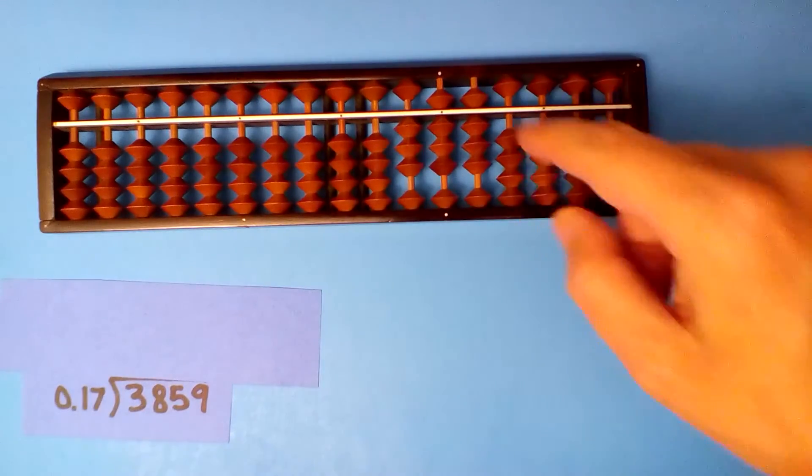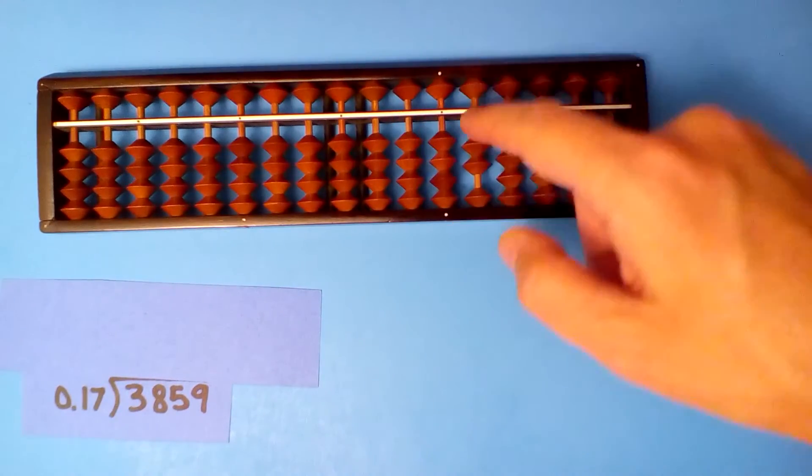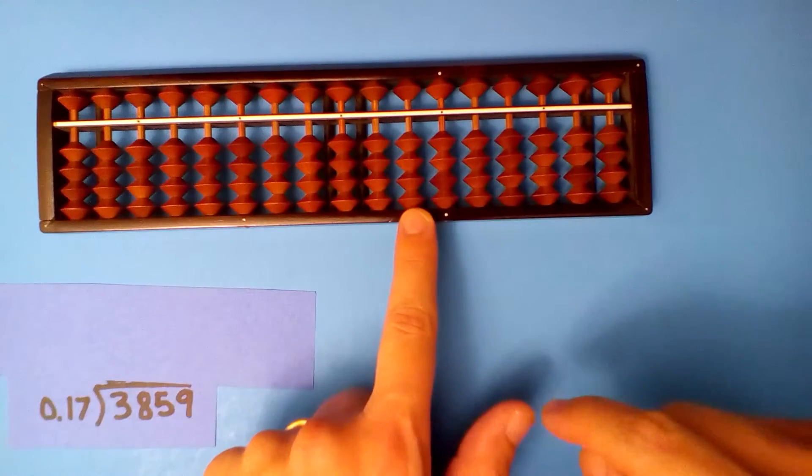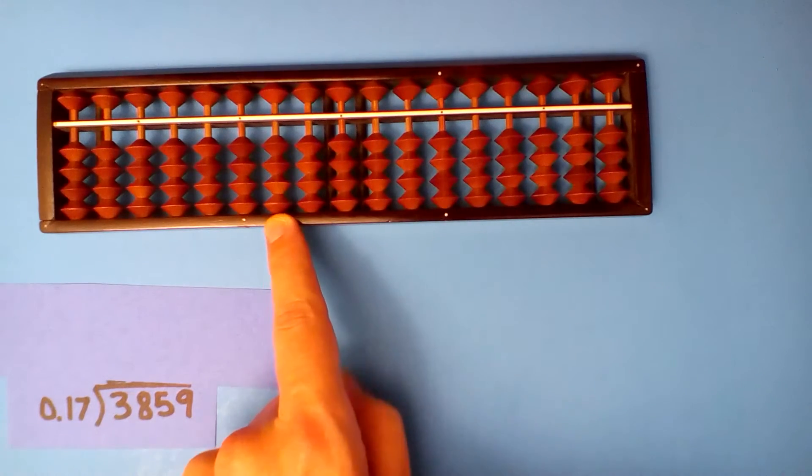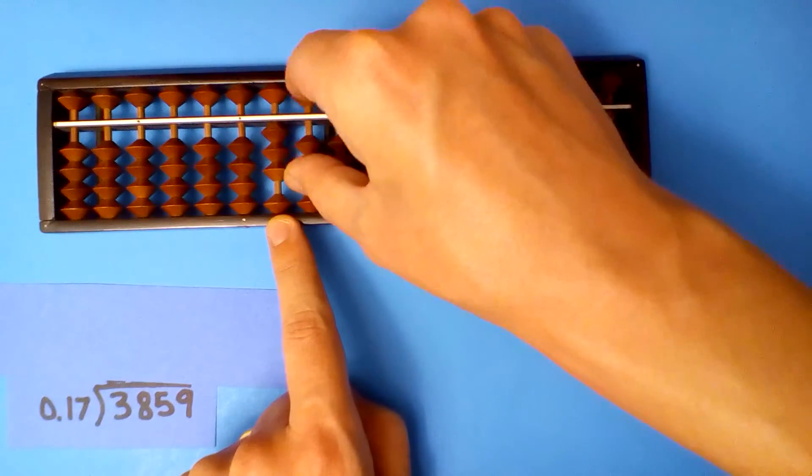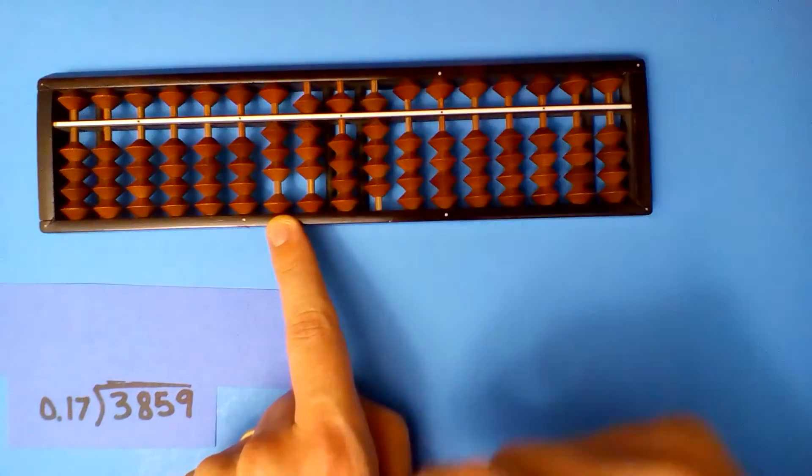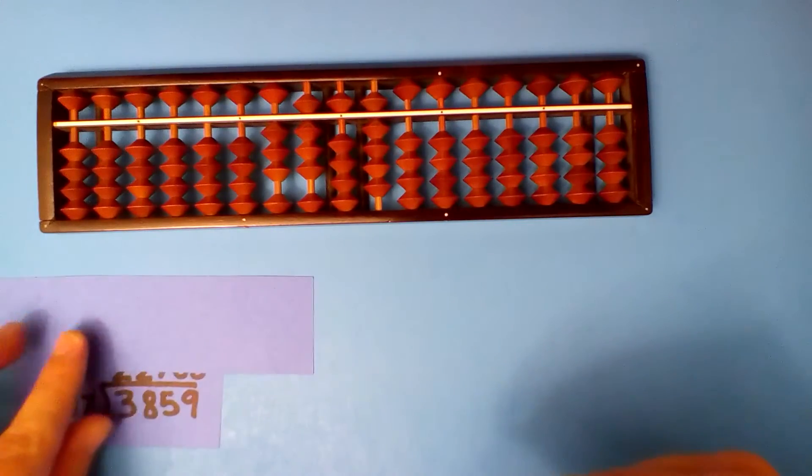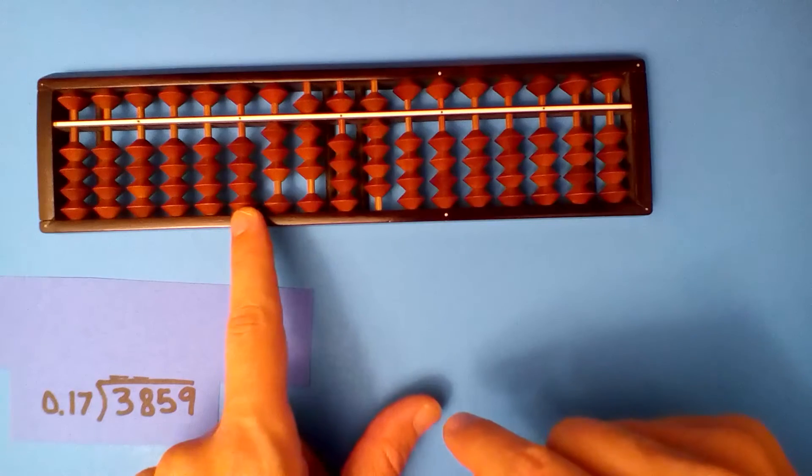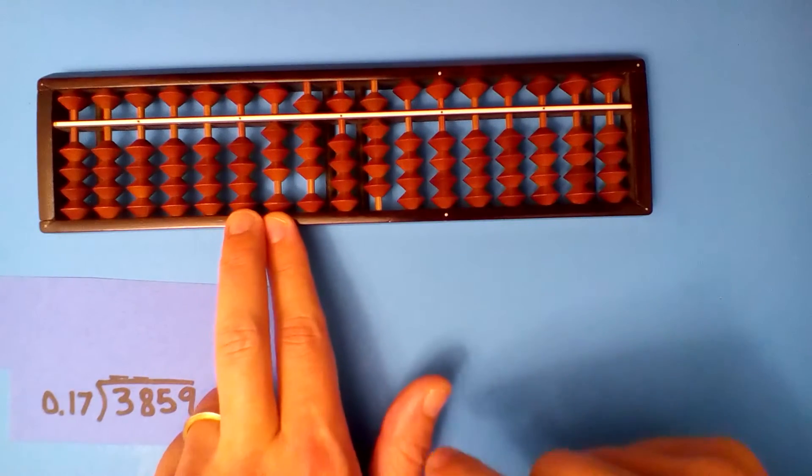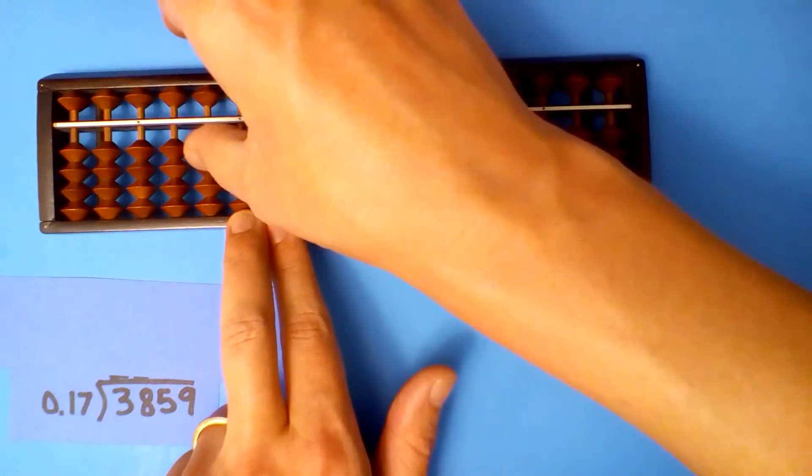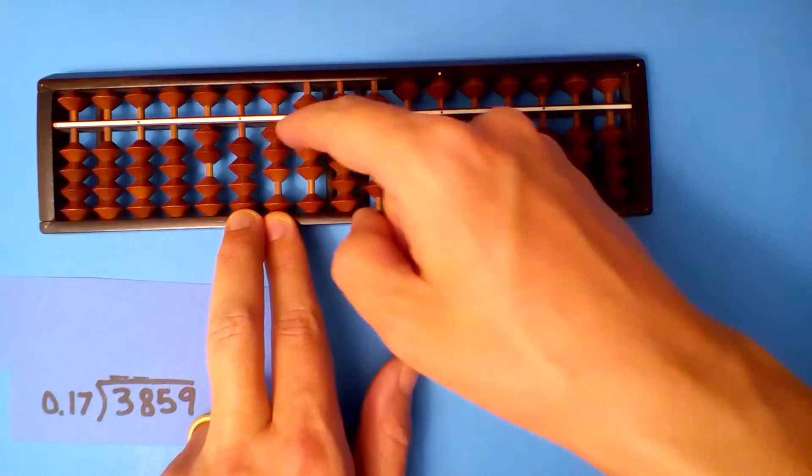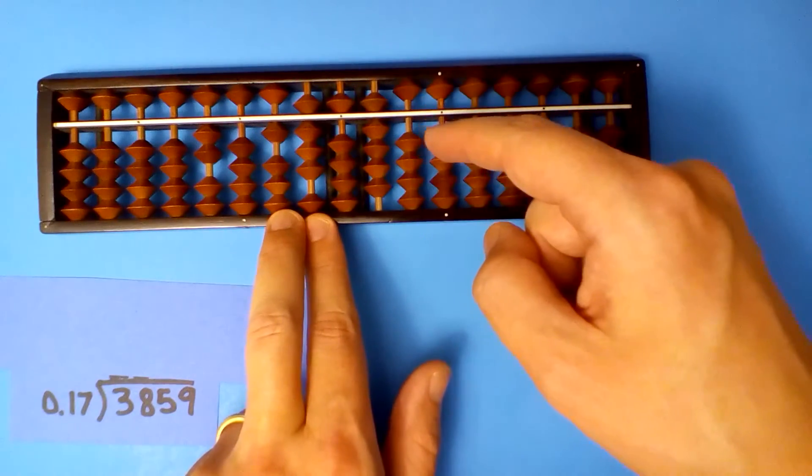What is 3,859 divided by 0.17? Start on the hundreds. Four digits versus zero digits. Four more digits in the dividend: 1, 2, 3, 4. Set up our dividend: 3, 8, 5, 9. And divide. 1 goes into 3 three times, but really it's 1.7, right? So I think only twice. 2 times 1 is 2, 2 times 7 is 14.